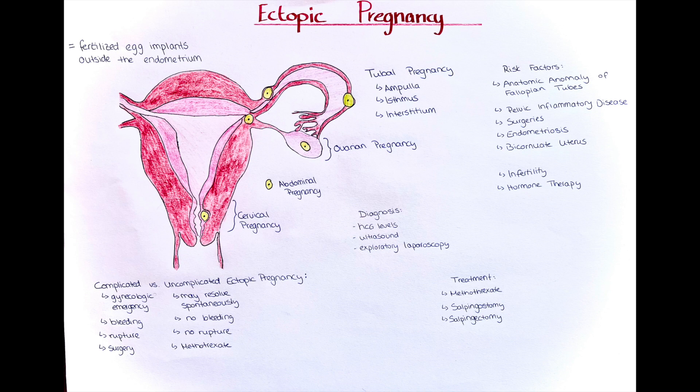There are several risk factors that make ectopic pregnancy more likely. The main reason is anatomic alteration of the fallopian tubes, which may be congenital or due to a history of pelvic inflammatory disease, a previous ectopic pregnancy, past surgeries involving the fallopian tubes, endometriosis, or having a bicornuate uterus.